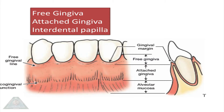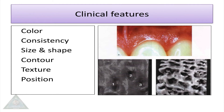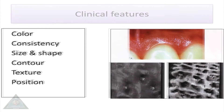Free gingiva extends from the crest of marginal gingiva to the base of the sulcus. Attached gingiva extends from the base of sulcus to the mucogingival junction, and interdental papilla occupies the embrasure space. Clinically, gingiva appears pink in colour with firm and resilient consistency. Marginal gingiva is knife-edge shaped and interdental papilla is pyramidal in shape, with uniform scalloping and a stippled surface.